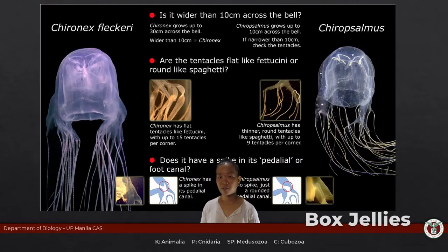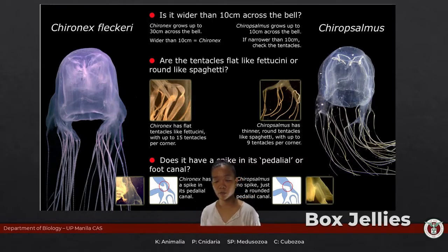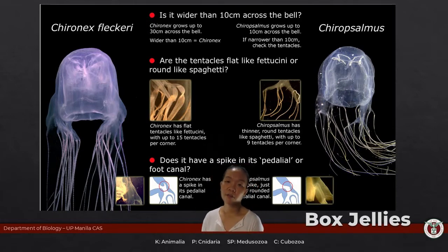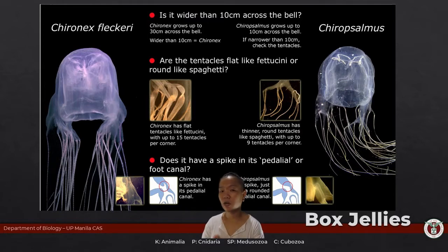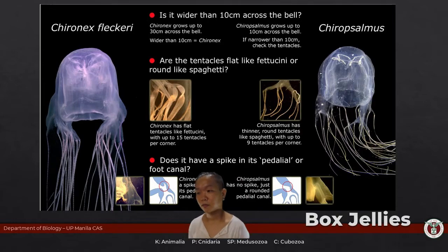Cubazoans are the box jellies. From the name itself, the swimming bell is shaped like a box. The tentacles of cubazoans are along the corners of the swimming bell. Common species include Chironex and Chiropsalmus. They are extremely transparent, so you can barely see them. If it's jellyfish season at the beach, ask the locals and listen to your guides, because these species can be deadly.